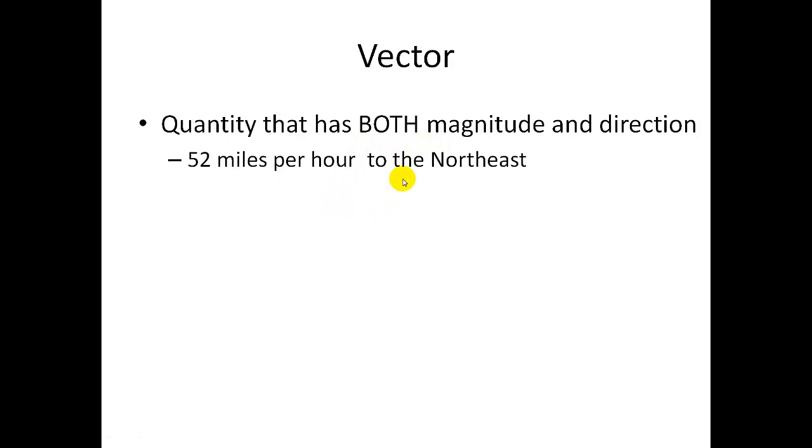A vector is a quantity that has both a magnitude and a direction. In this case, the storm had a magnitude of 52 miles per hour in a direction which we called northeast. Now directions can be represented in many different ways, and we'll talk about a couple of the major ones as well.